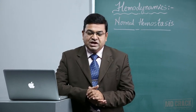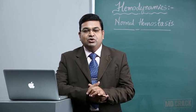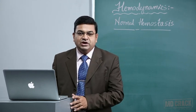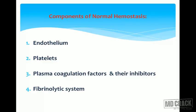Let us look at how normal hemostasis takes place. The normal components of hemostasis include endothelial cells, which are an integral part; platelets; various plasma coagulation factors; not only activating factors but an equal amount of inhibitory factors; and the fibrinolytic system, which will dissolve the blood clot that is formed.